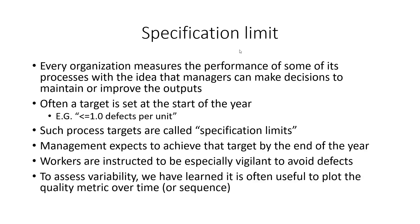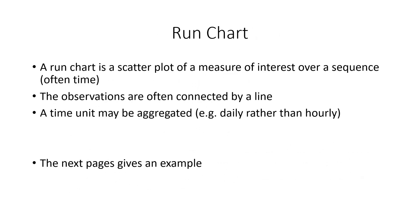As a statistician or quantitative person, what we like to do is plot the quality metric over time. This plotting of the metric over time is called a run chart. It's a scatter plot of a measure of interest over a sequence — usually over time, but not always. You could plot each individual observation over time, or sometimes plot averages aggregated over a day, so daily averages over time.